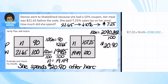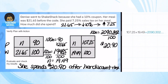So after her discount plus tax, she spent $20.90. Not bad, math marvels. We have one more problem to do in this unit. Hit pause so you can jot this down, and then we have one more guided practice.